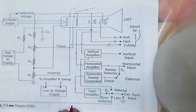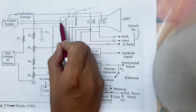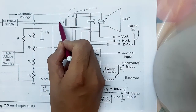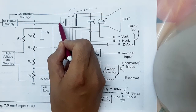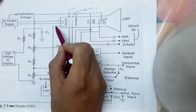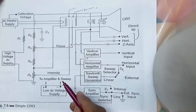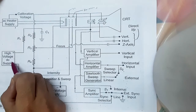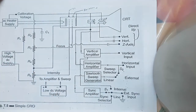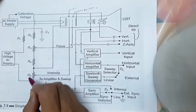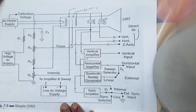The AC filament supplies power to the CRT heaters — this is our heater. This also provides an accurate AC calibration voltage. CRT DC voltage is obtained from the high voltage DC supply. There is a voltage divider R1 to R5 — R1, R2, R3, R4, R5 — which are the voltage divider circuit.